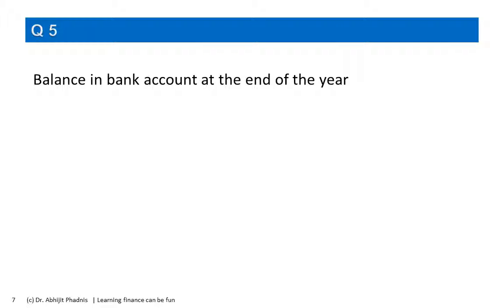Q5: balance in bank account at the end of the year. You guessed it right — it's an asset, not an inflow or outflow. The balance in bank account is a result of three things: the balance at the beginning of the year, plus the inflows, minus the outflows. When we have money in the bank account, we have a claim on the bank, and any claim on any other party — whether it's a customer, bank, or the central bank — is an asset for us. And that should be in the balance sheet.